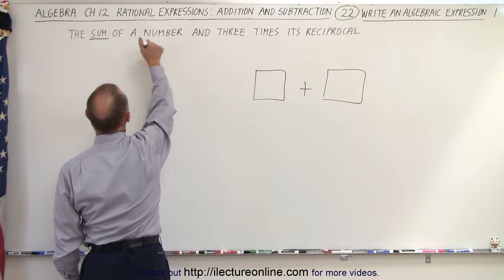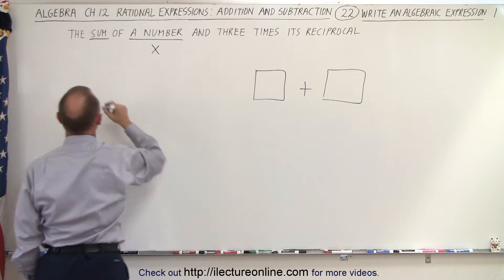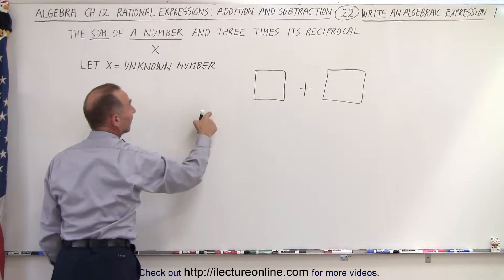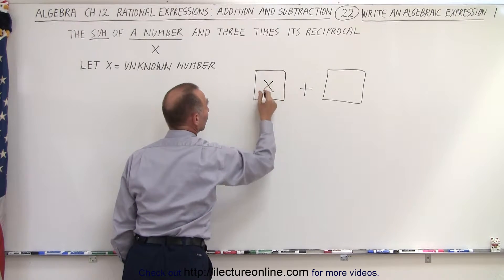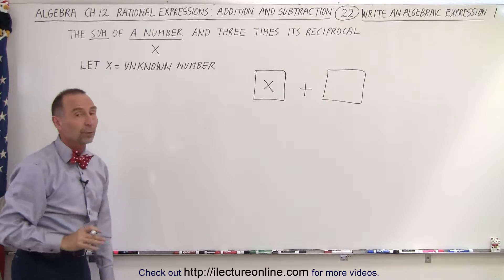Next we're going to sum a number. We don't know what the number is, so we're going to call it X. Let X equal the unknown number. That goes in the first box because we're going to add two things together. The first thing is an unknown number, which we'll call X.